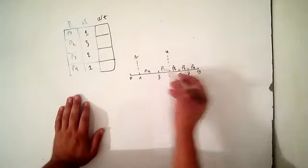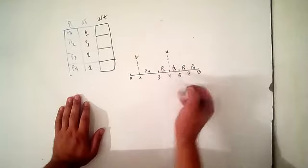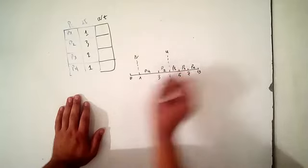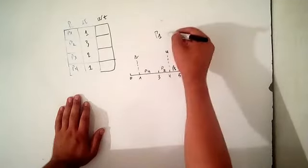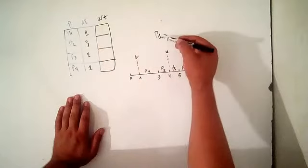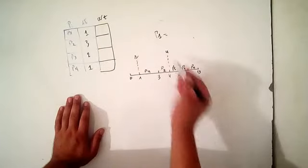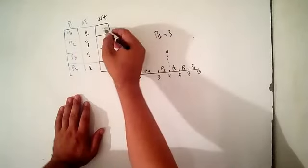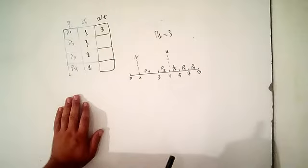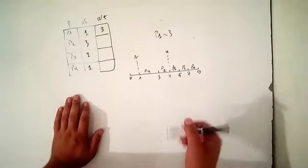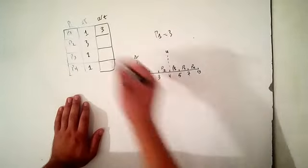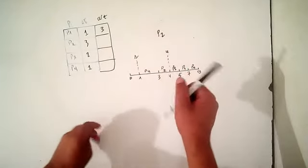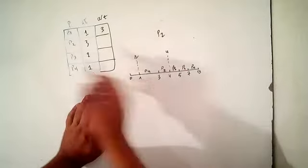Even if P1 appears earlier, we must use the last occurrence. So the waiting time of P1 is equal to 4 minus 1, which equals 3. The waiting time of P1 is 3.